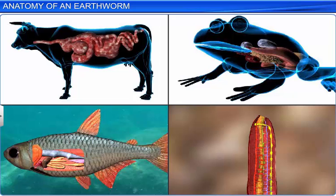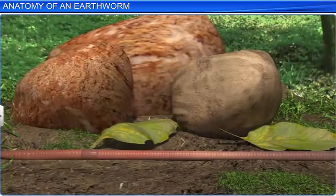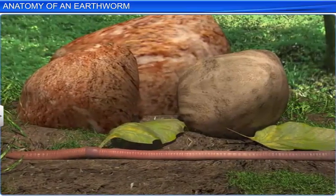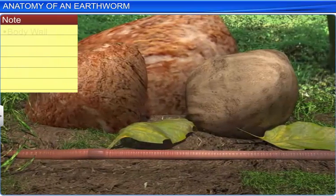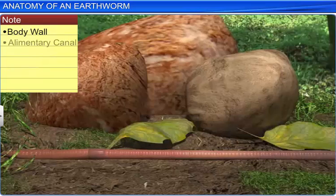Anatomy refers to the study of the internal structures or organs of an organism. Let's take a look at the anatomical features of an earthworm, such as the body wall, the alimentary canal, and the circulatory, excretory, nervous, and reproductive systems.